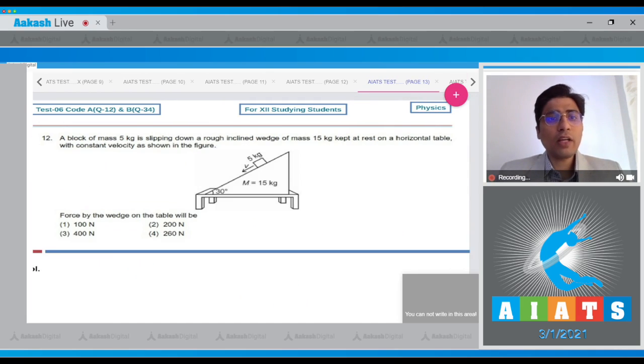In question 12, a block of mass 5 kg slipping down a rough inclined wedge of mass 15 kg kept at rest on a horizontal table with constant velocity as shown in the figure. The force by the wedge on the table will be.